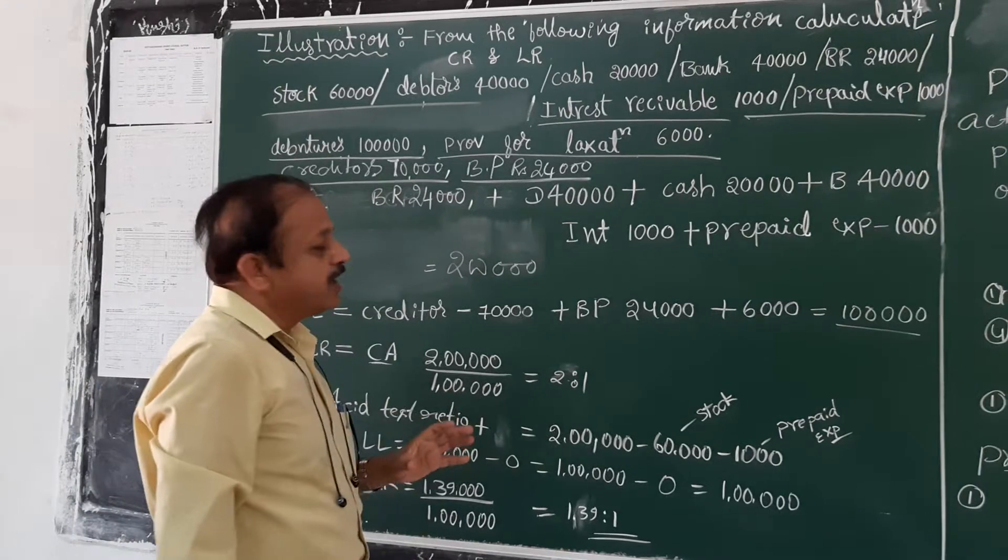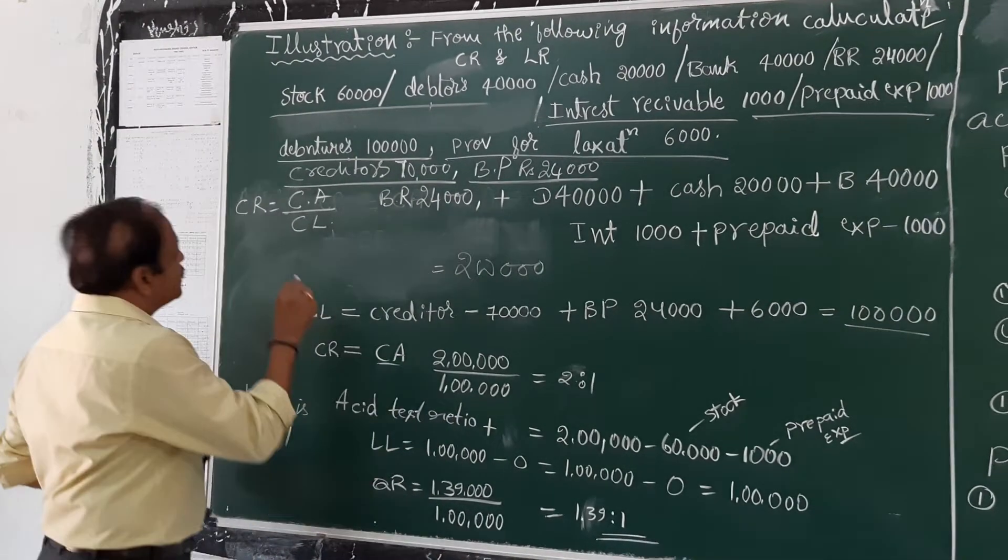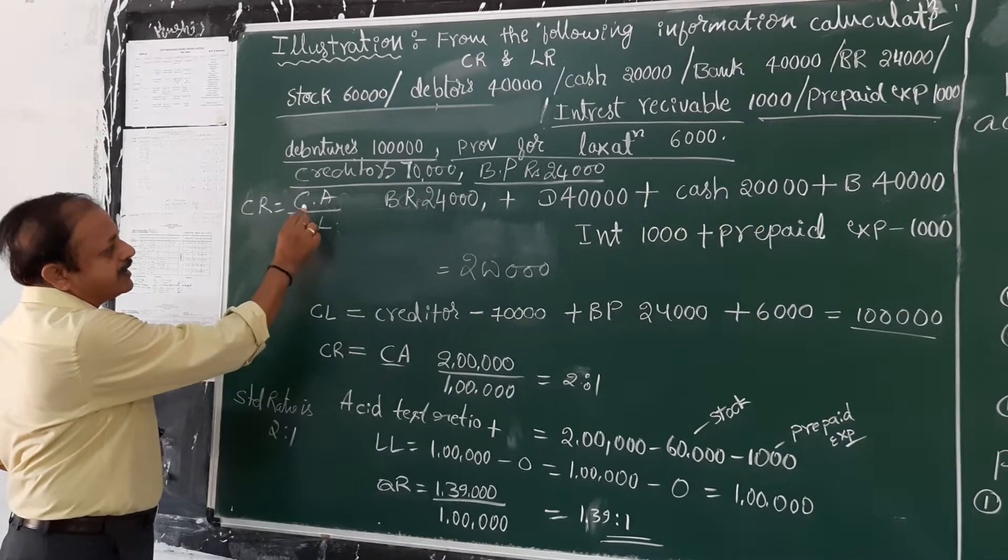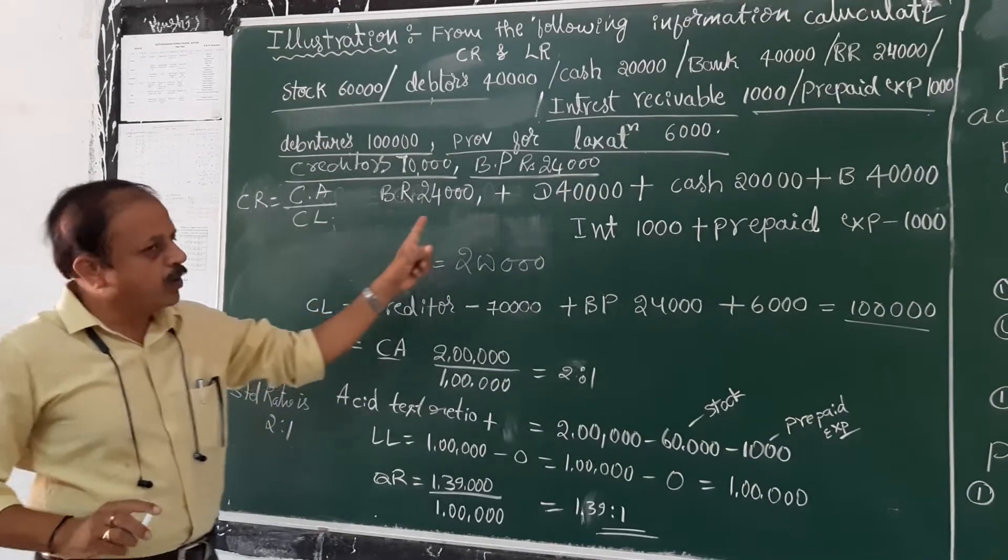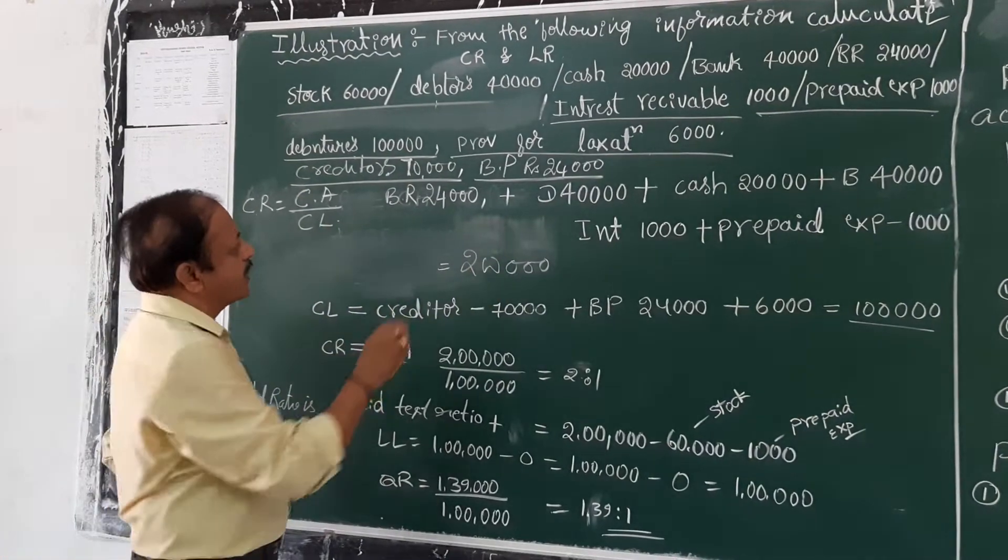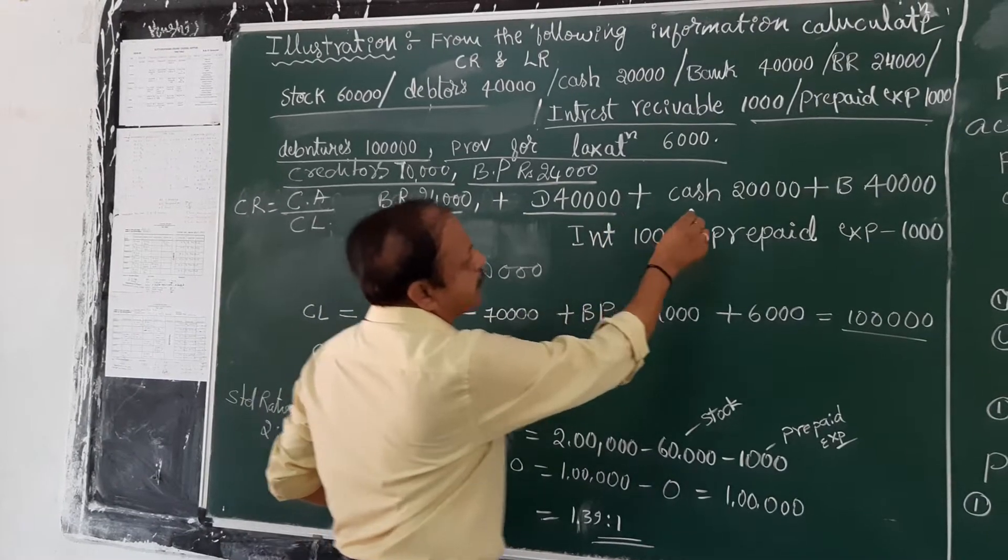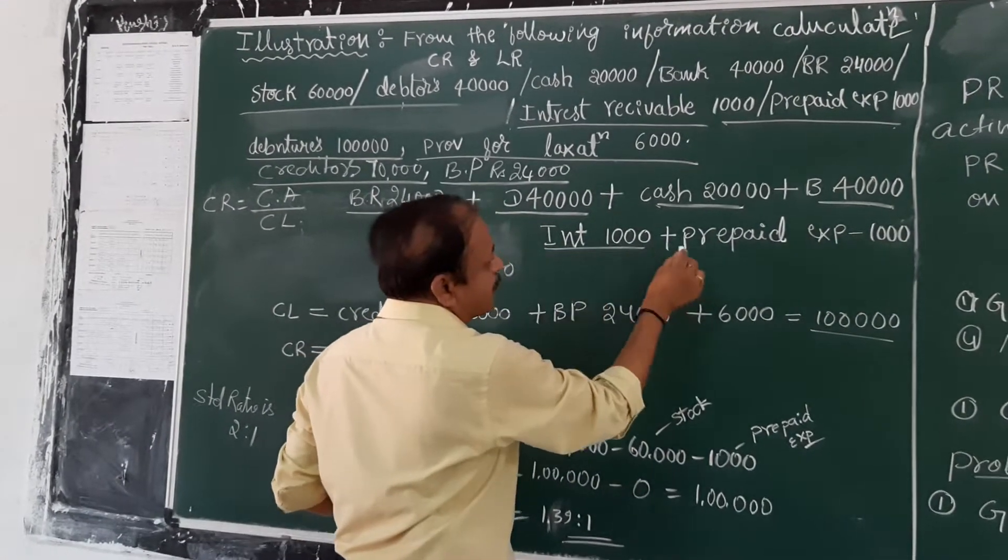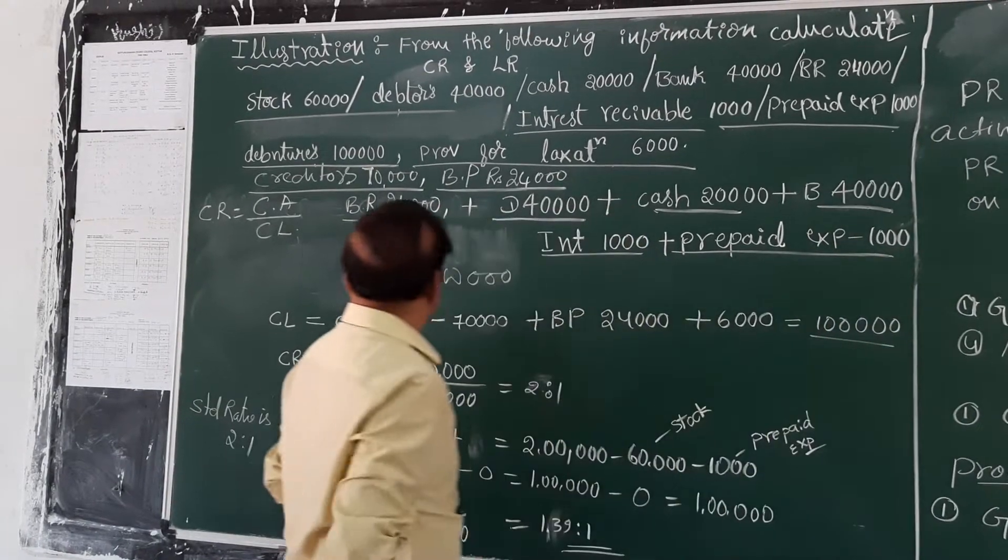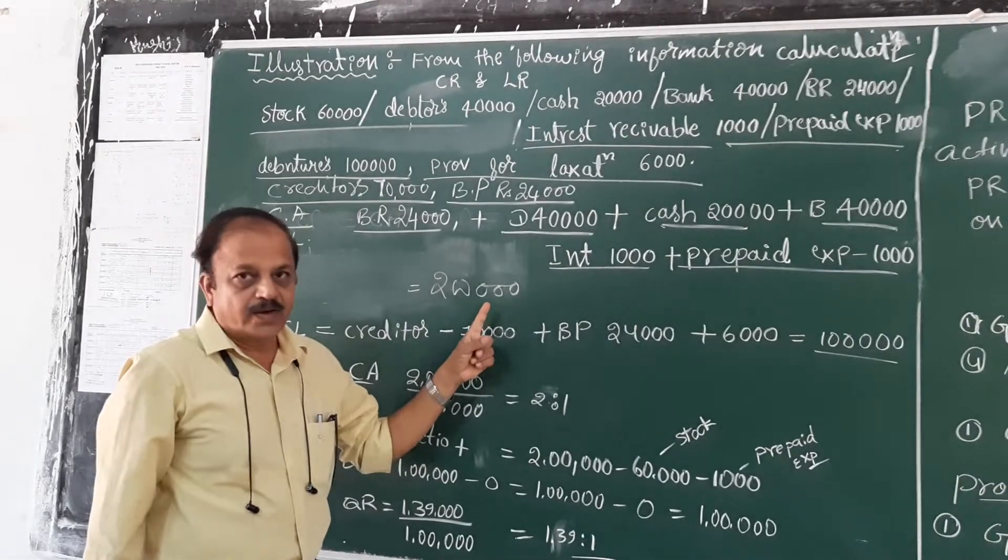Now let us see what are the current assets of the organization. As I told you, the formula of current liabilities is current assets divided by current liabilities. They are all current assets of the organization: bills receivable plus debtors plus cash plus bank plus interest receivable plus prepaid expenses. The total current assets amounts to rupees 2 lakhs.